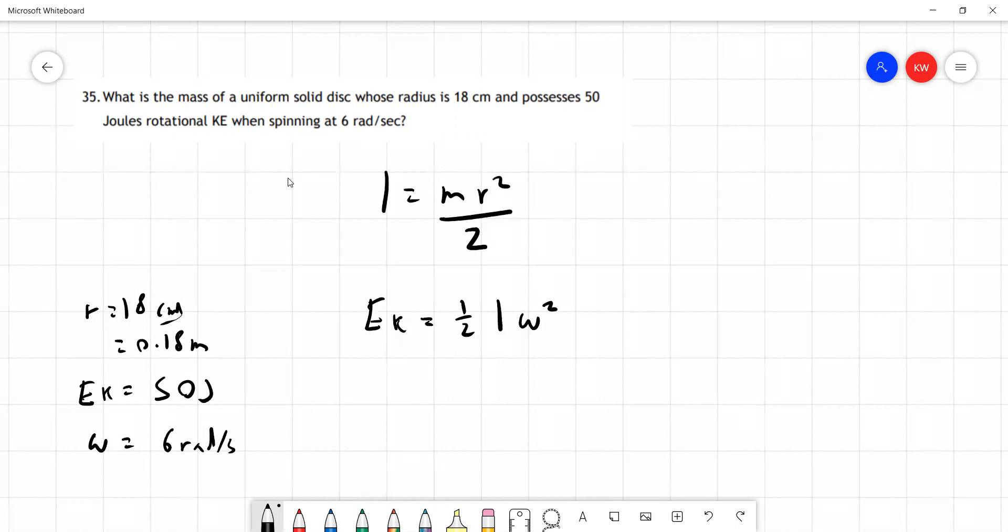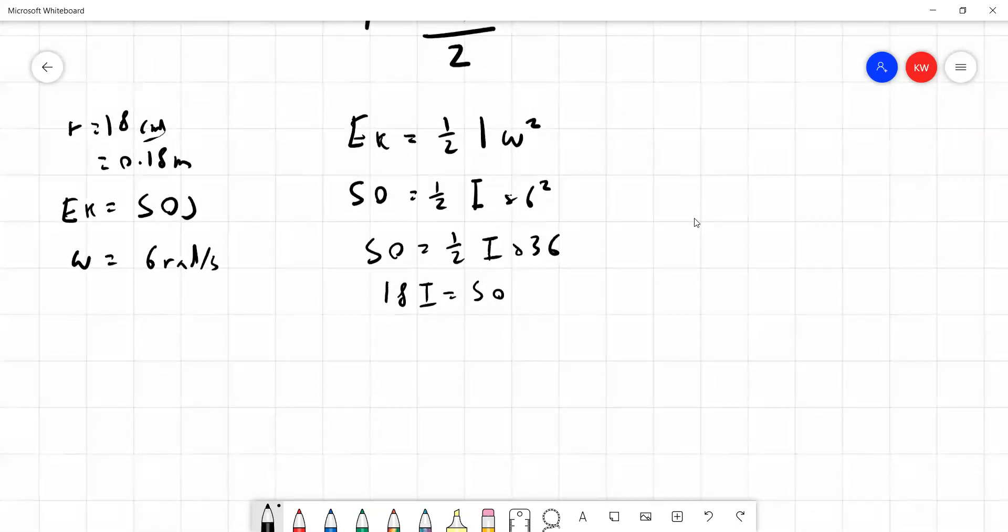We can put these straight into our second formula to replace Ek with 50. So we get a half times I times omega squared. Omega is 6 so 6 squared and so we get 50 is equal to a half I times 36. Well a half times 36 is 18 so we have 18I is equal to 50 and so I is equal to 2.778 that's rounded to three decimal places and remember our units for I kilogram meter squared.